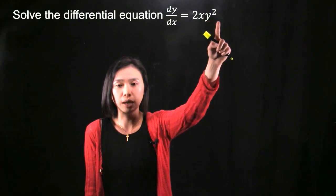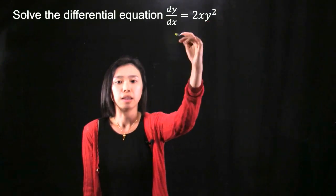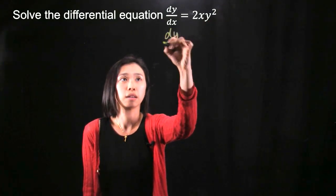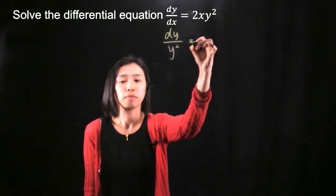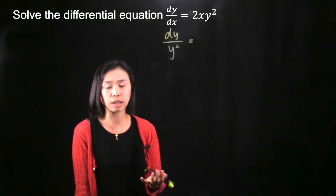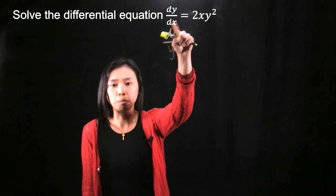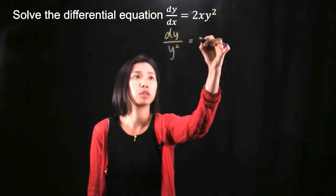Right now we want to move that y squared into the left hand side, and we can do it by dividing it. Then you can treat dy/dx as a fraction. That means we can move the dx to the right hand side of the equation.